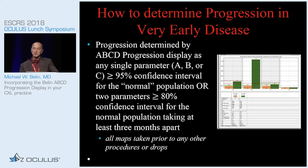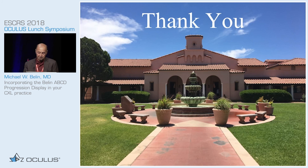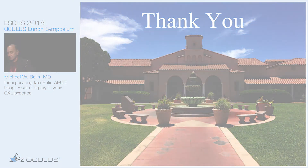Our goal should be not stabilizing after you've lost vision, but preventing loss of vision. To determine progression in very early disease, we look at the ABCD progression display. I recommend any single parameter at the 95% level, or any two parameters at the 80% level — mathematically those are basically the same. Thank you very much.